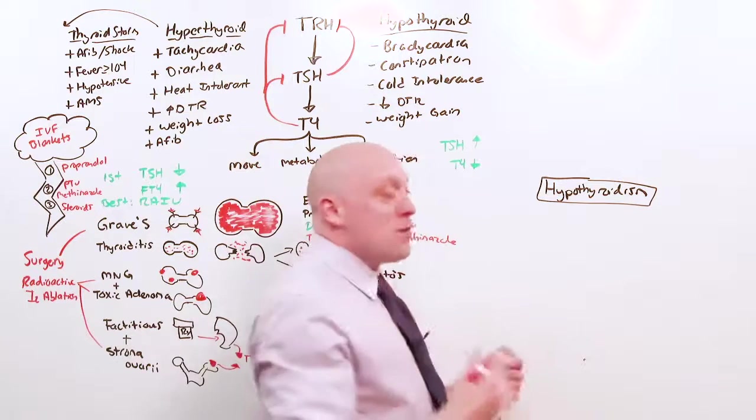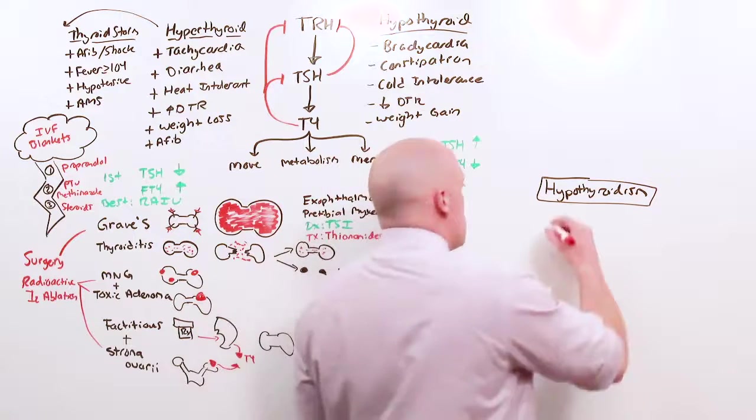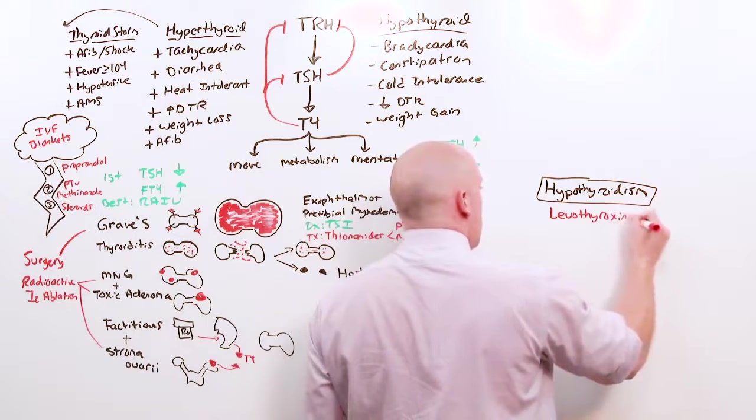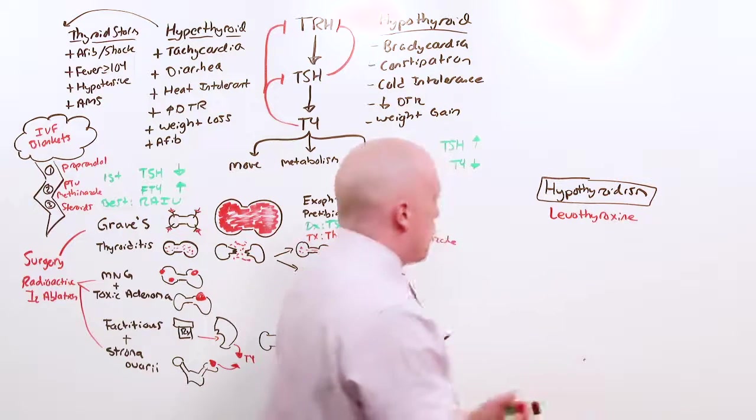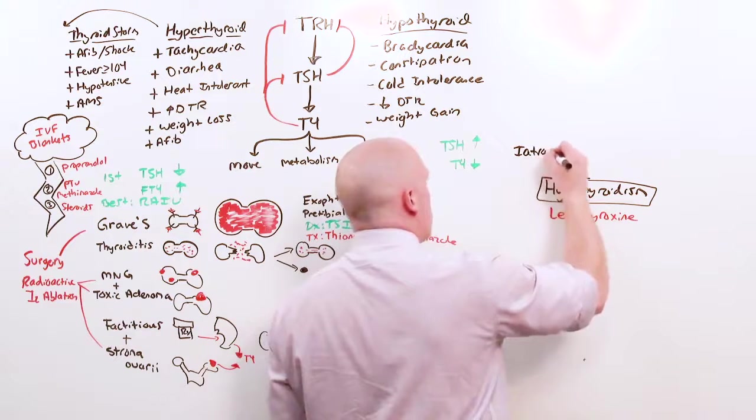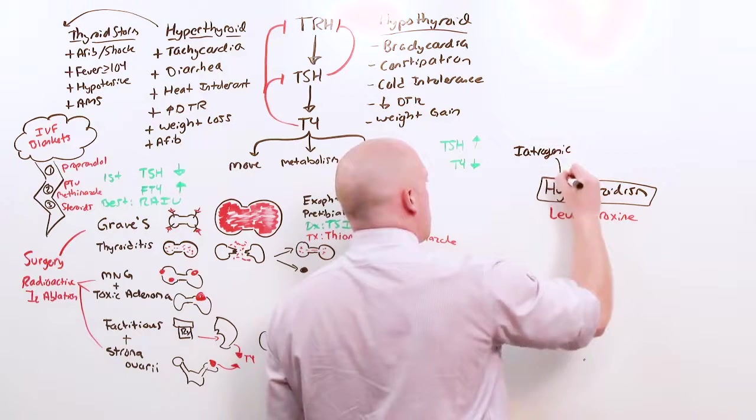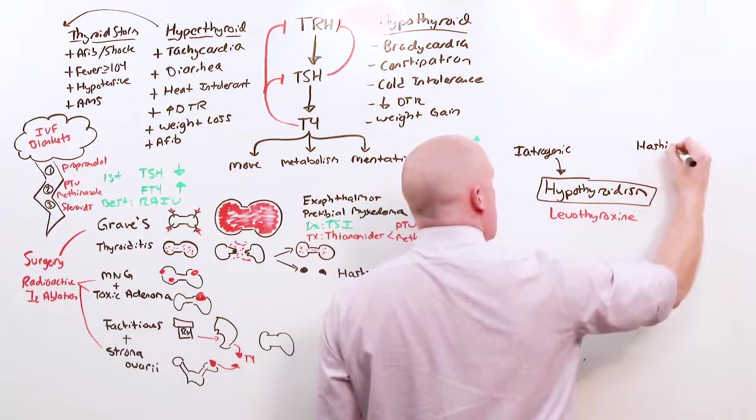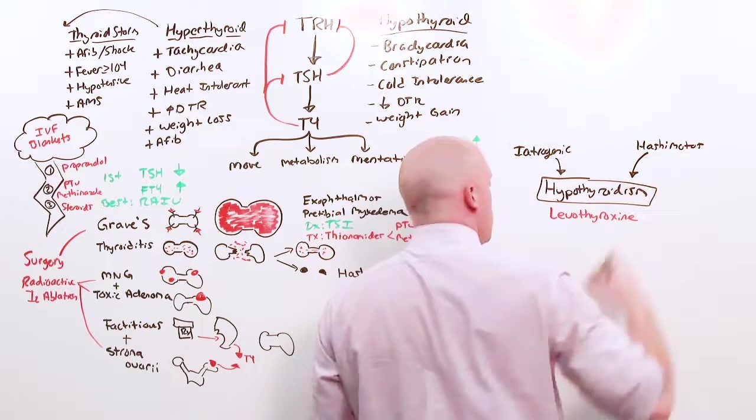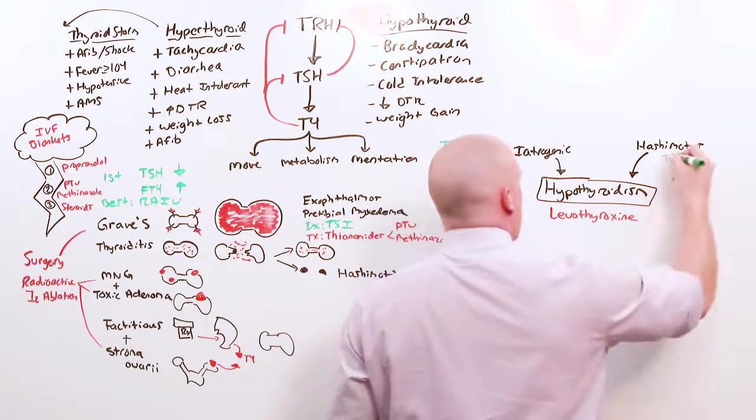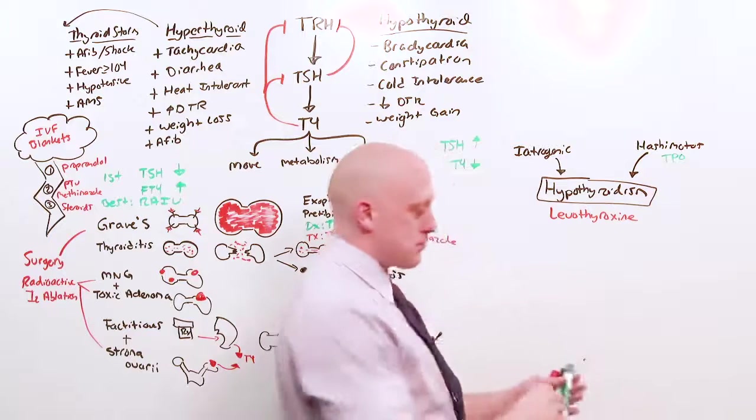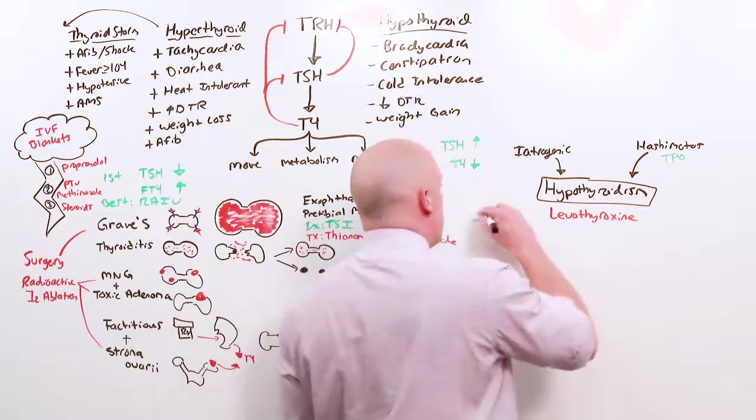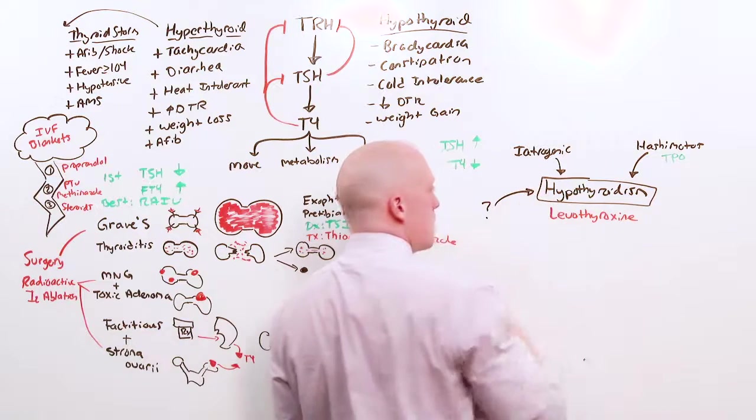If you have hypothyroidism, regardless of the cause, you just give them what they don't have, which is levothyroxine. The most common cause is iatrogenic, we treated Graves' disease. The most common non-iatrogenic cause is Hashimoto's. Get those TPO antibodies to confirm, even though it doesn't matter. It could be any other cause at all, but it doesn't matter, because you do the same thing.